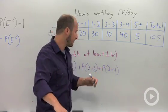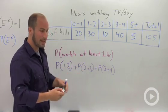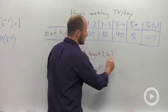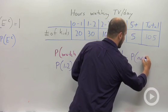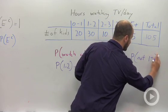So what we can do is the probability of watching at least one hour is going to be the same thing as one minus the probability of not one plus hours.